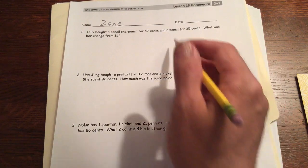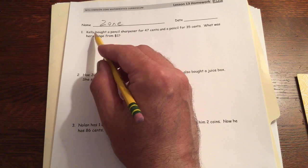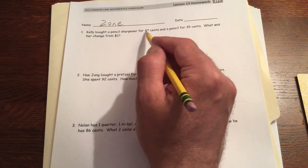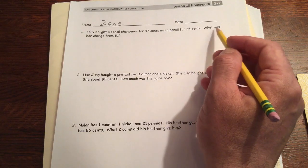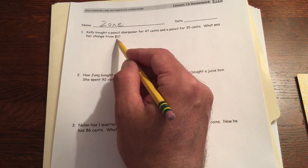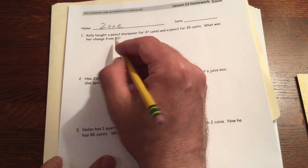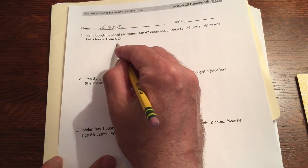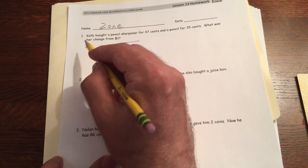This is page one. Kelly bought a pencil sharpener for 47 cents and a pencil for 35 cents. What was her change from a dollar? So let's see, we have to RDW this.